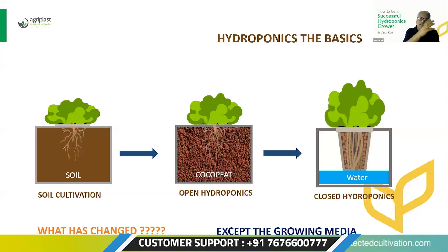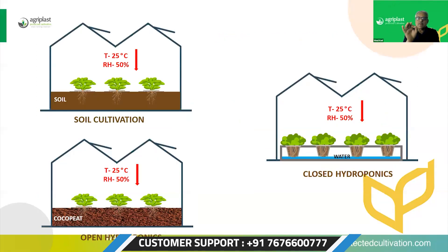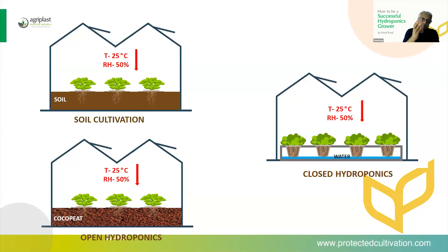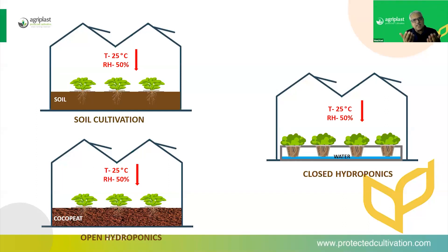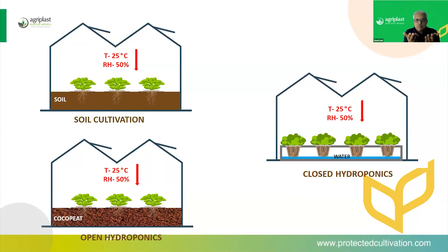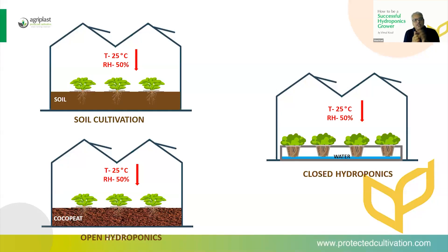Now assume we take these three plants and put them in three greenhouses having the same conditions inside — temperature at 25 degrees, relative humidity at 50% — one plant each in one greenhouse. Now let's ask ourselves: are these plants going to behave differently? No, because plants grow because of plant physiology, and plant physiology does not change with a change in growing media. Even if they start behaving differently, they will not change their system of growing. The only change that has happened is in the roots, because roots are in three different media.